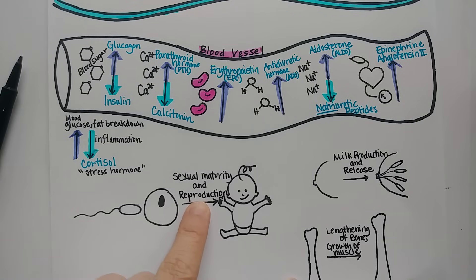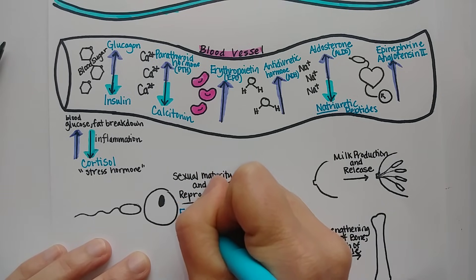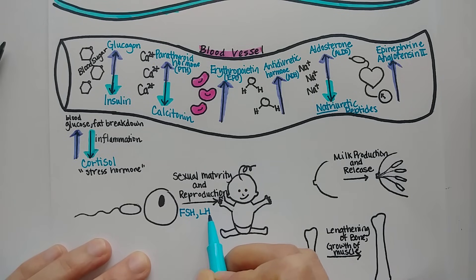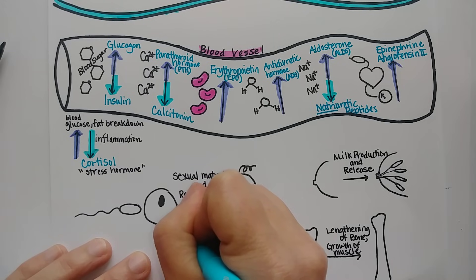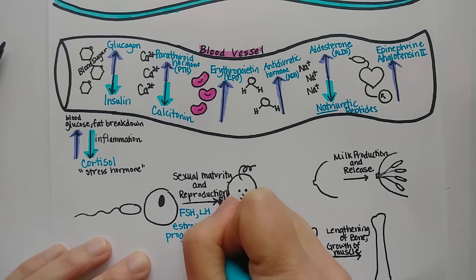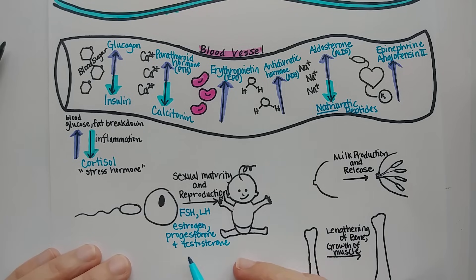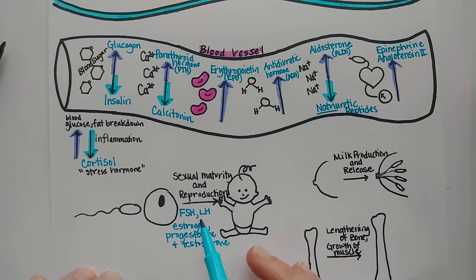Sexual maturity and reproduction are controlled by steroid hormones and pituitary gland hormones. You have FSH (follicle stimulating hormone) and LH (luteinizing hormone), which help regulate estrogen, progesterone, and testosterone — the latter produced in the testes in males. Together these hormones control sperm and egg development, thickening of the uterine lining, and the maintenance of secondary sex characteristics so that reproduction can be successful. That's five hormones implicated in sexual maturity and reproduction.